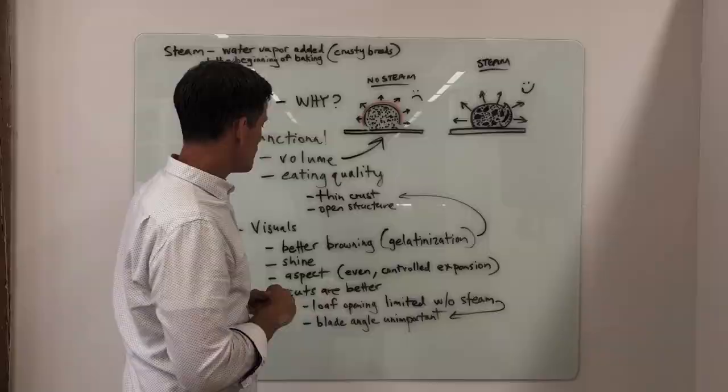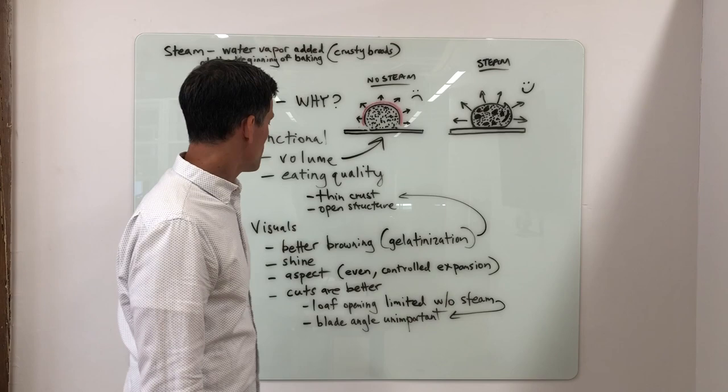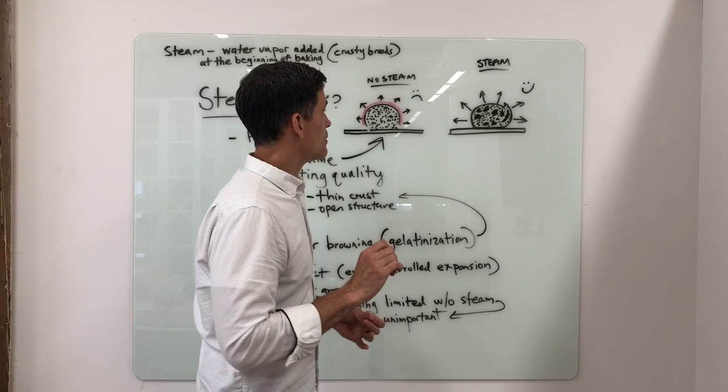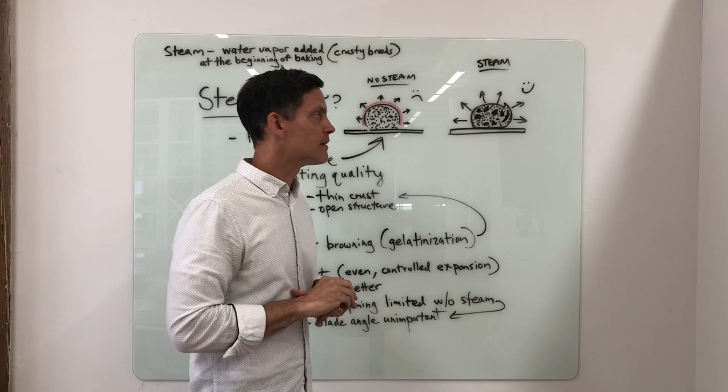Without steam, loaf opening is limited. Blade angle is unimportant. If you don't have steam, it doesn't matter what your blade angle is, what your ingredients are, or the quality of fermentation. If you bake without steam, the cuts will not open. It doesn't matter how well you score or what blade angle you use. Steam versus no steam is very important for functional and visual reasons.